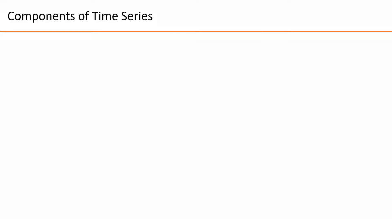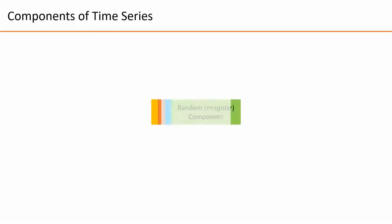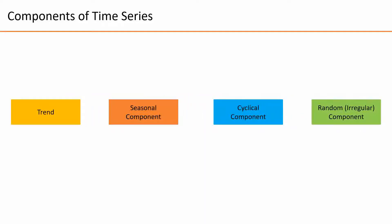In this video, I am going to give you an overview of the components of time series, which will also help you learn forecasting techniques like Holt-Winters in the later part of this lecture series. Every time series has one of these four components: trend, seasonal component, cyclical component, and random or irregular components.